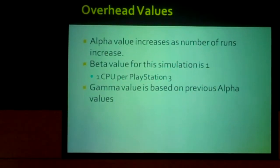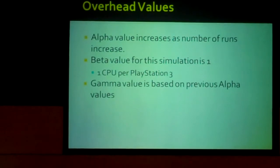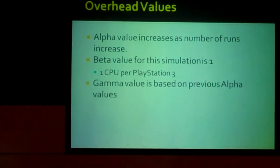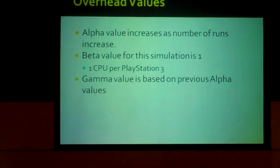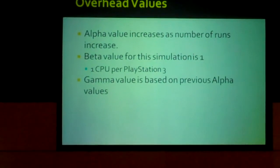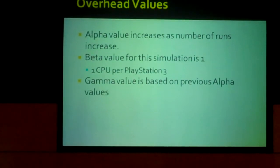The alpha value increases as the number of runs increase. And the beta value for this simulation is one because there's only one processor in a PlayStation 3. And the gamma value is based on previous alpha values.